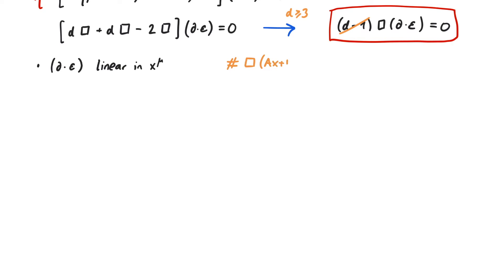The box operator acts like a second derivative, and the second derivative of a linear function is 0. And if the divergence of epsilon is linear, then epsilon itself is quadratic in x. So we can write epsilon_mu as a_mu plus b_mu_nu x^nu plus c_mu_nu_rho x^nu x^rho. Remember that this is still an infinitesimal quantity, so a, b, and c are infinitesimally small as well.